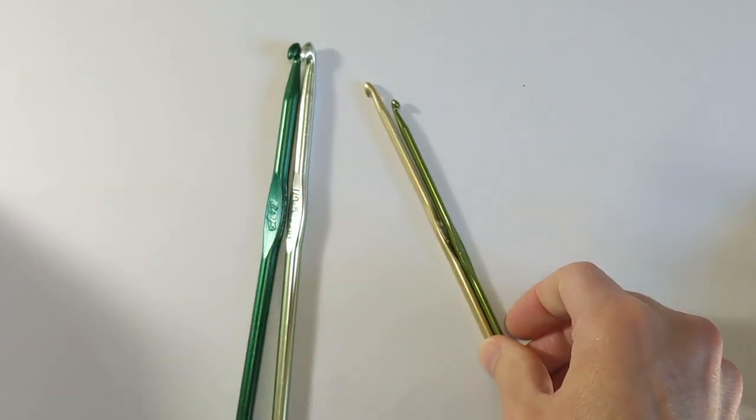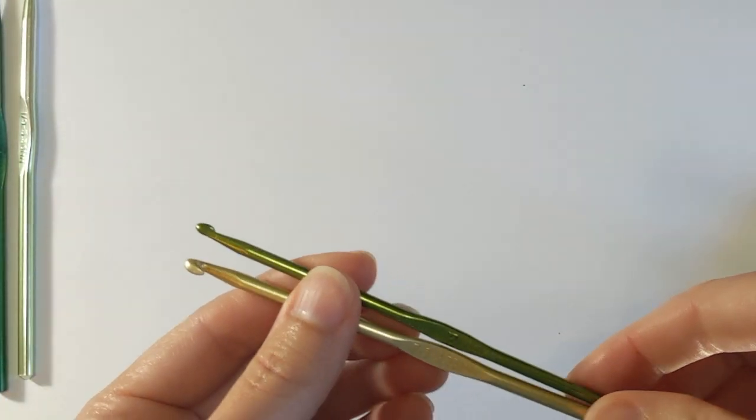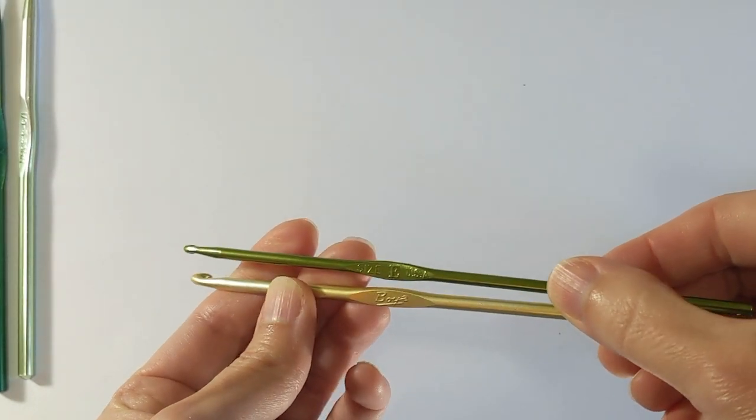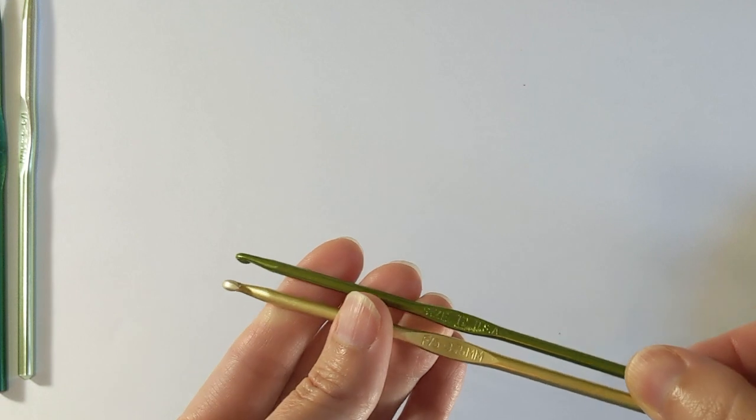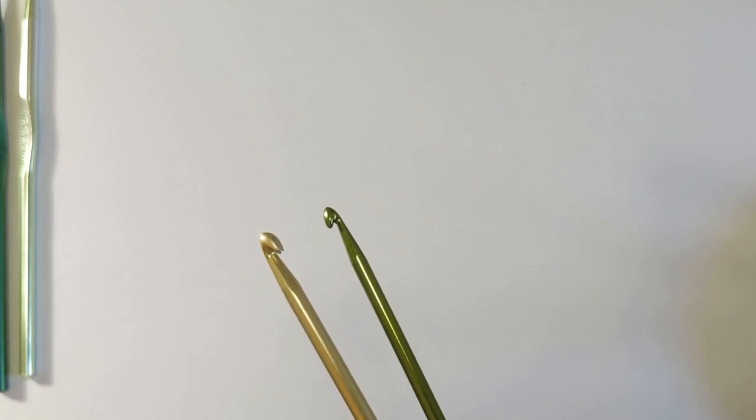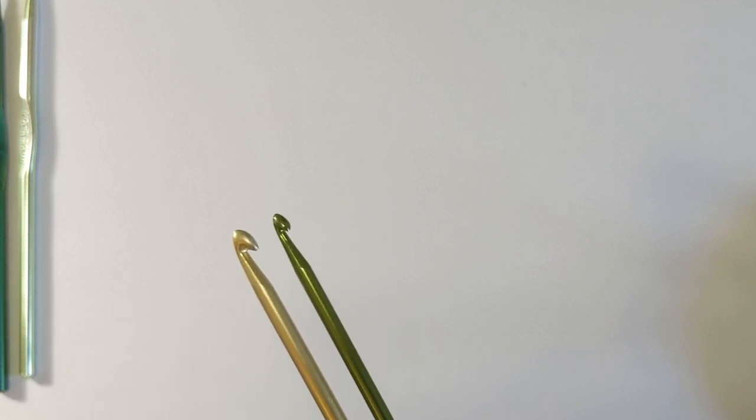So let's look at some hooks. The first ones I want to show you really briefly, these are not the same size. I have a size E and a size F, but I wanted you to be able to see close up the differences in the shapes.